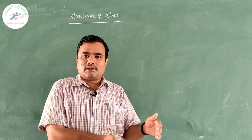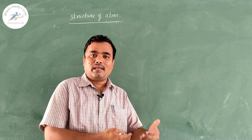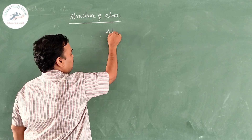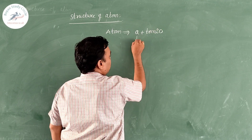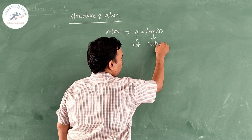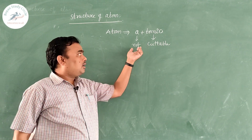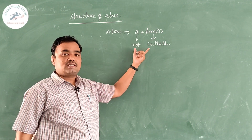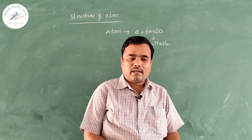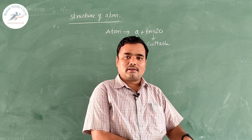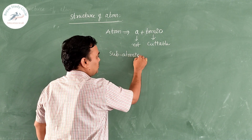According to Dalton's atomic theory, atom is not divided. The name itself — atom — is derived from 'a' plus 'tomeo': 'a' means not, 'tomeo' means cuttable. So the word atom is derived from 'atomeo', which means not cuttable. But further studies reveal that atom can also be divided and there are some simple particles inside the atom, called subatomic particles.